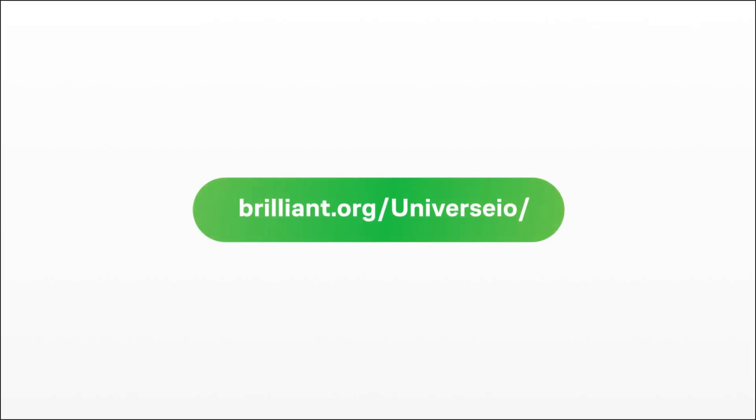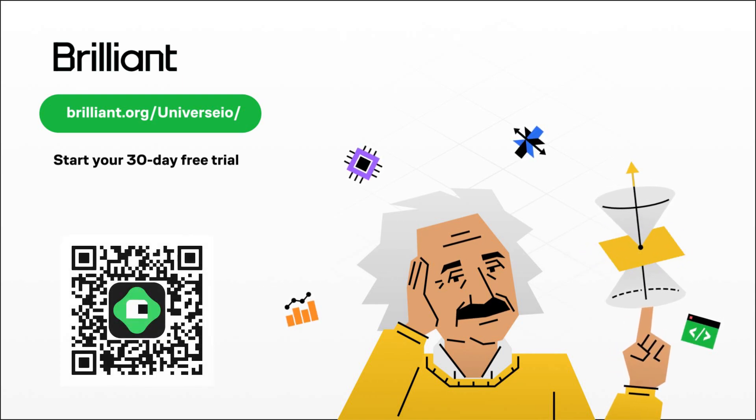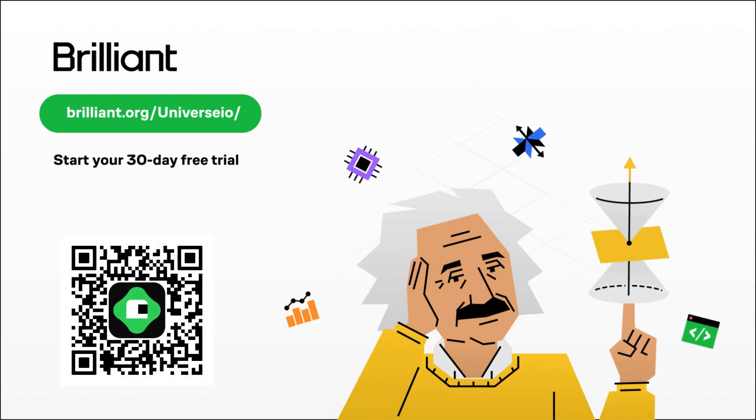To try everything Brilliant has to offer, free for a full 30 days, visit brilliant.org slash universio, or scan the QR code or click on the link in the description below. You also get 20% off an annual premium subscription.